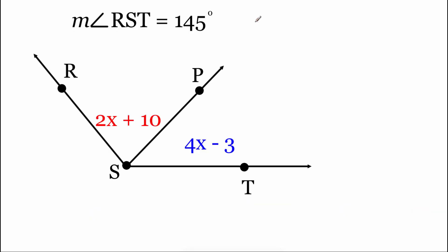Before we get too far into this example, I'm going to write out the angle addition postulate again. So the measure of angle RSP plus the measure of angle PST is going to equal the measure of the big angle RST. Now if we look at what we've got, we're told that the measure of angle RST is 145 degrees. Then if we look at the two smaller angles, there are some algebraic expressions. In the RSP angle, we've got 2x plus 10. In the PST angle, we've got 4x minus 3. Those are going to represent the measures of those angles.